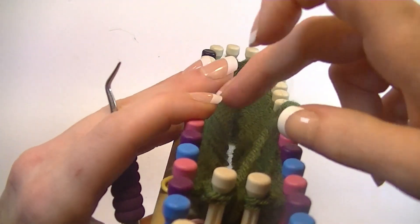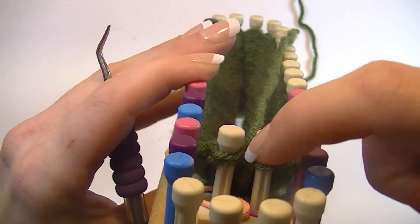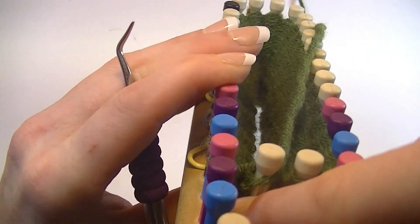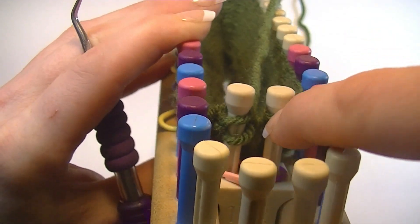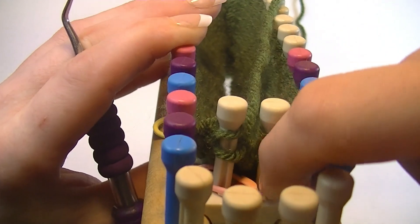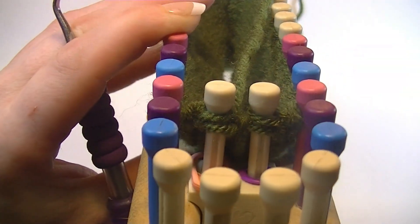You will work two rounds of the knit stitch. Your first round, there will be two stitches on both of these pegs. Treat both of those stitches on each peg as one stitch.